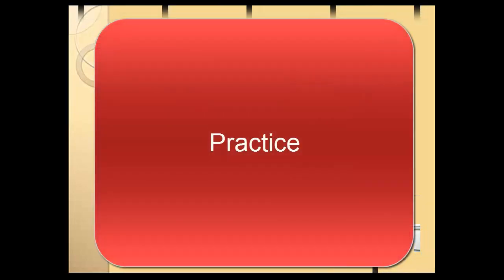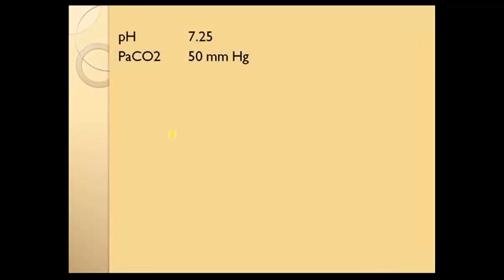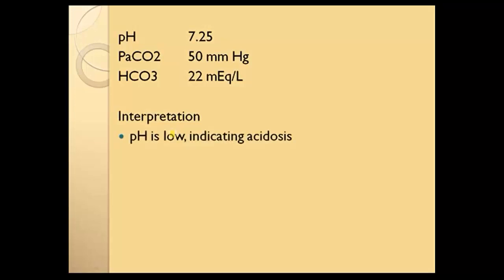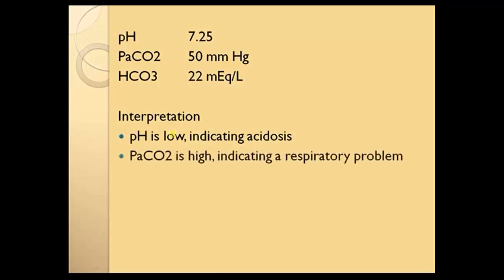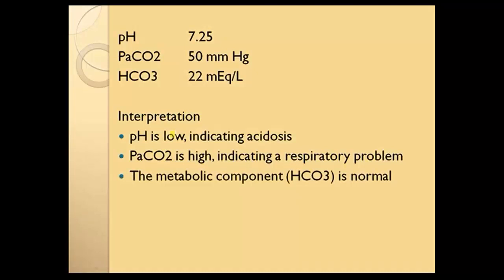This is just strict ABG interpretation. For treatment and nursing interventions, refer back to your notes. Let's start with the first one. Write down your normals when you're in a testing situation right away, so you don't feel like you have to memorize these. The pH in this case is low — it's less than 7.35, so that tells us this is acidosis. The PaCO2 is high, indicating a respiratory problem. The metabolic component, the bicarb, is normal — it's within normal range.